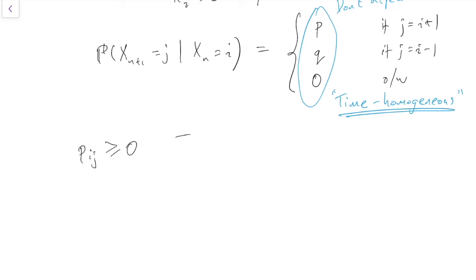So it's also the case that the sum over j of p, i, j equals 1 for all i. Because that's, from i, summing up all the probabilities of moving somewhere, including p, i, i, the probability of staying at i itself. And those probabilities all will have to add up to 1.